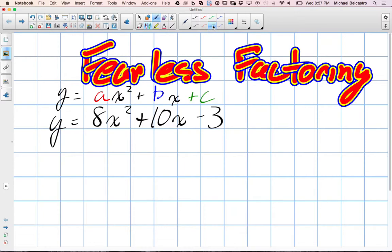So what would be my c value? Negative three. What would be my b value? 10x. Or, we actually just focus on just the value, so just 10 in this one. And what would be the a value? 8. That's right, perfect.